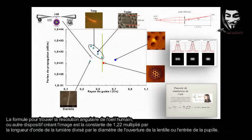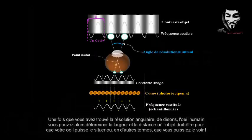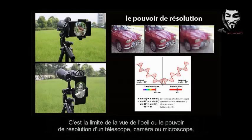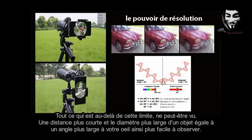The formula to find the angular resolution of the human eye, or any image-forming device, is the constant 1.22 times the wavelength of light divided by the diameter of the lens aperture or entrance pupil. Once you figure out the angular resolution of, say, the human eye, you can then determine how large or how far away an object must be for you to be able to resolve it — in other words, for you to be able to see it. This is the limit of eyesight, or the resolving power of a telescope, camera, or microscope. Anything beyond this limit cannot be seen.